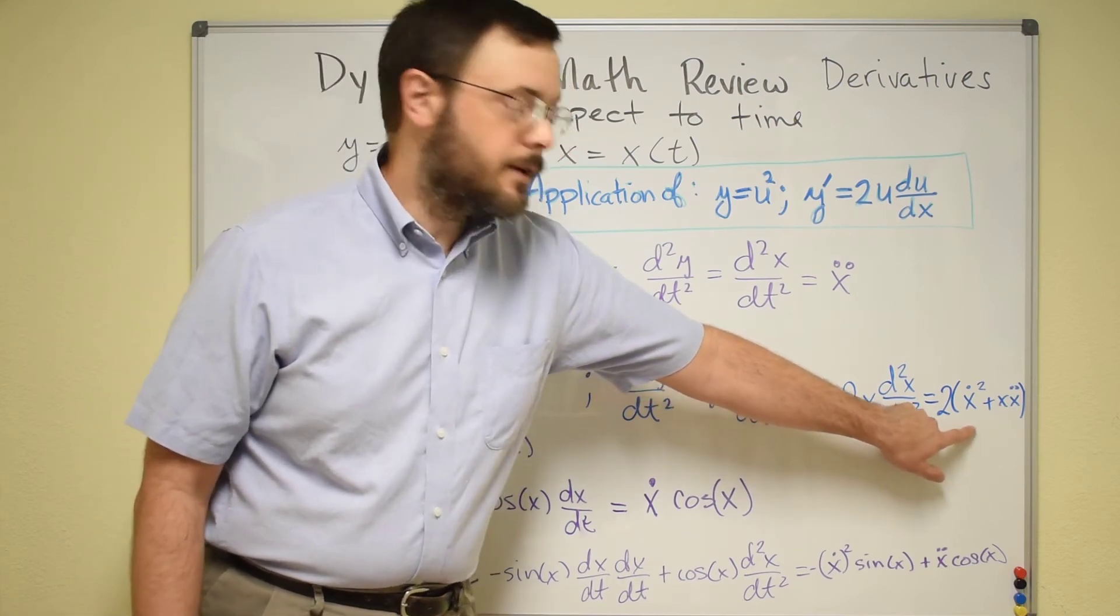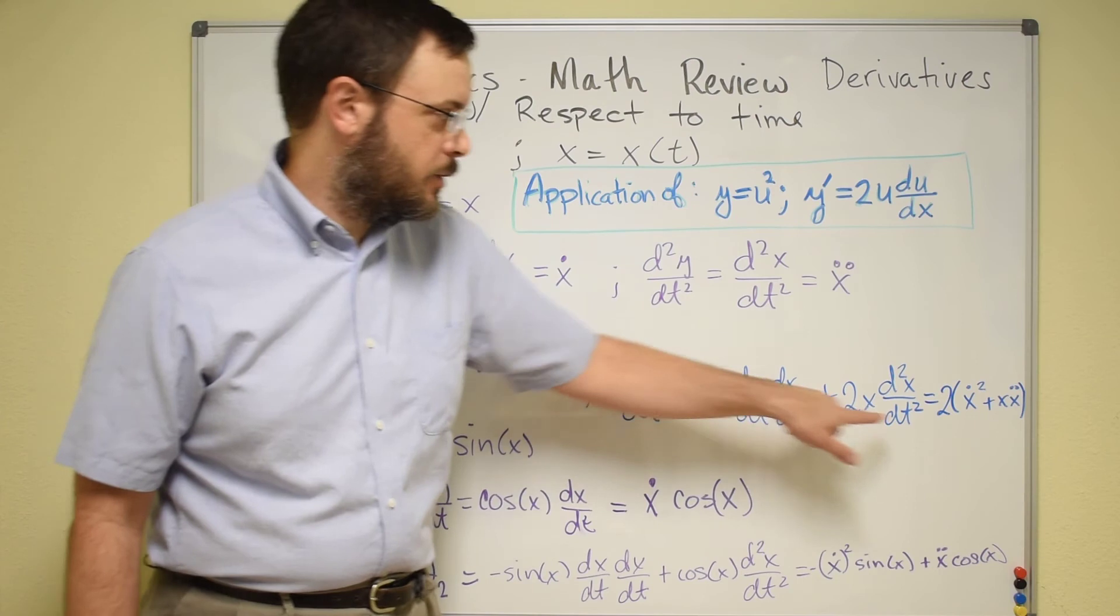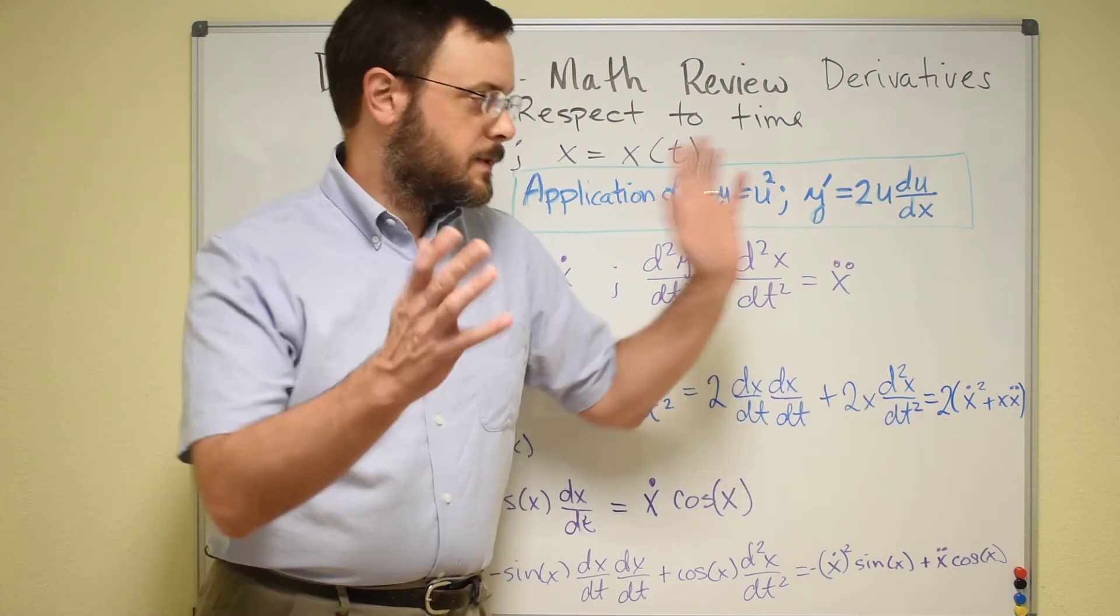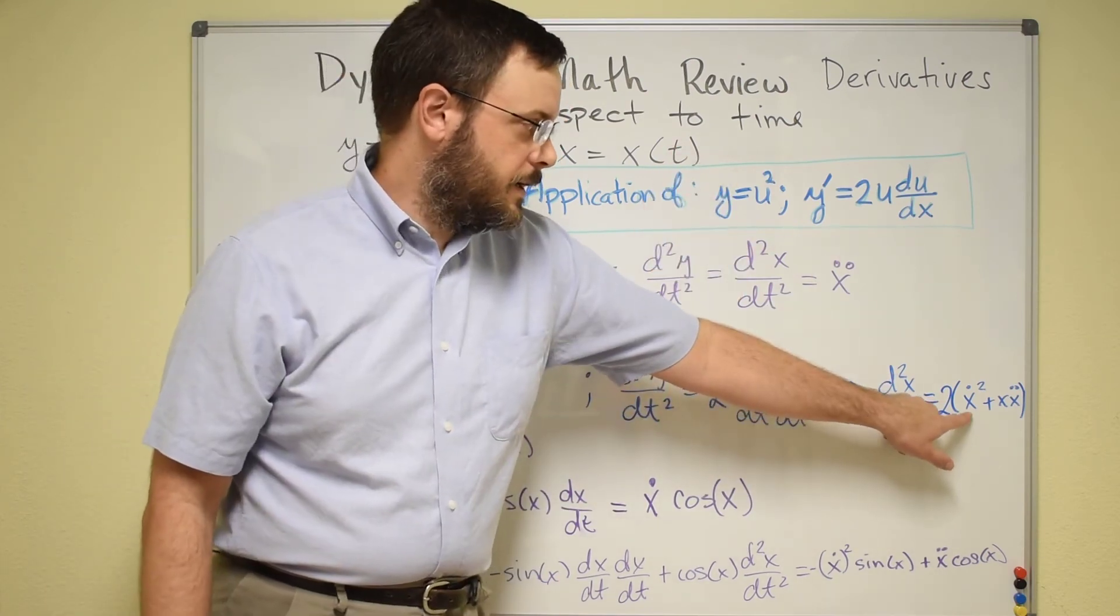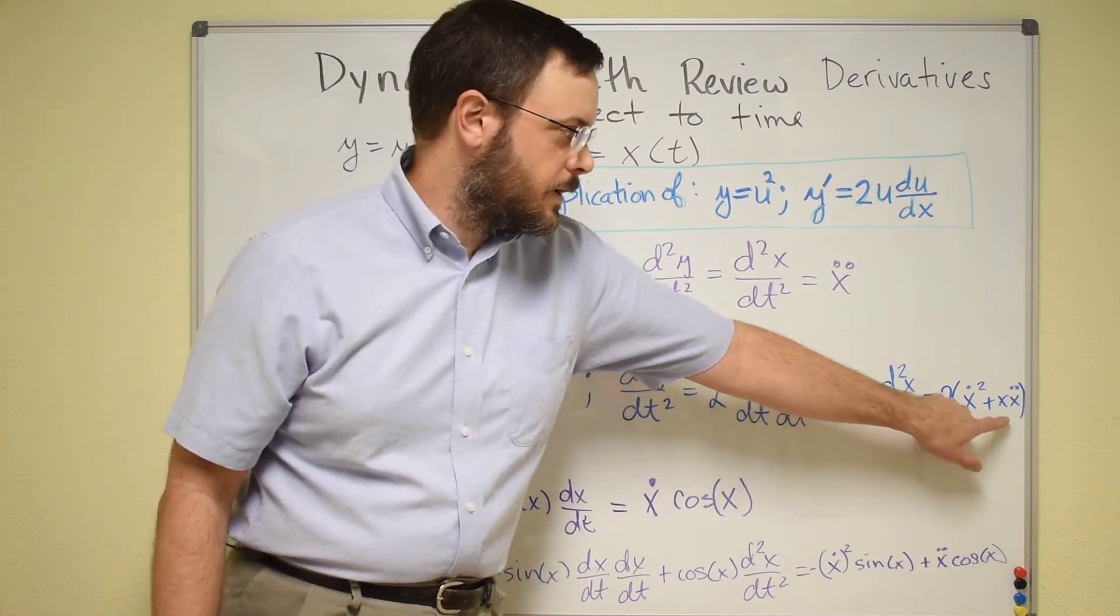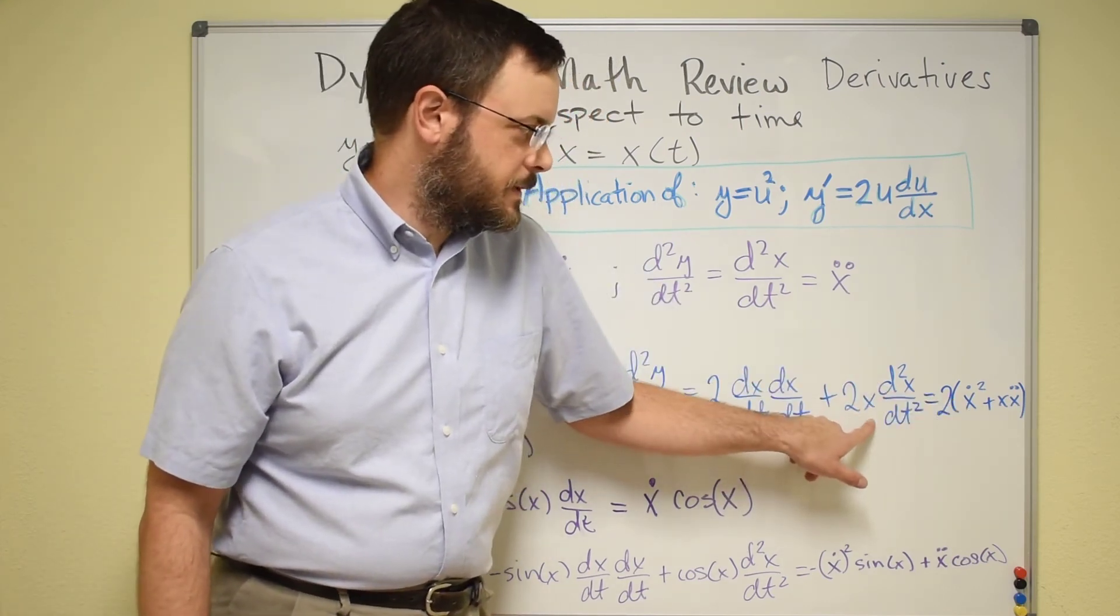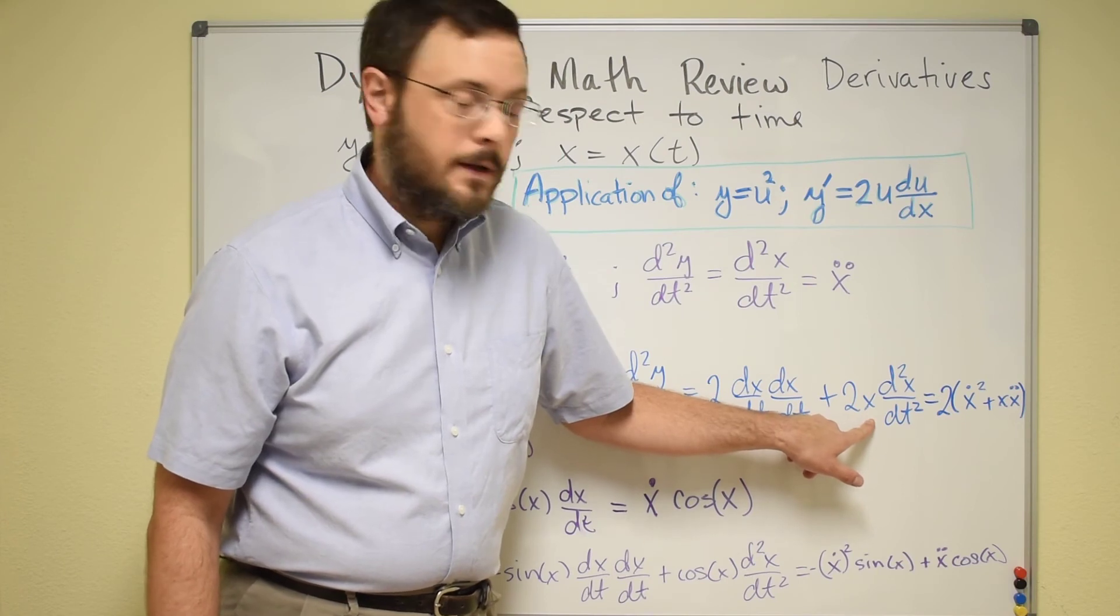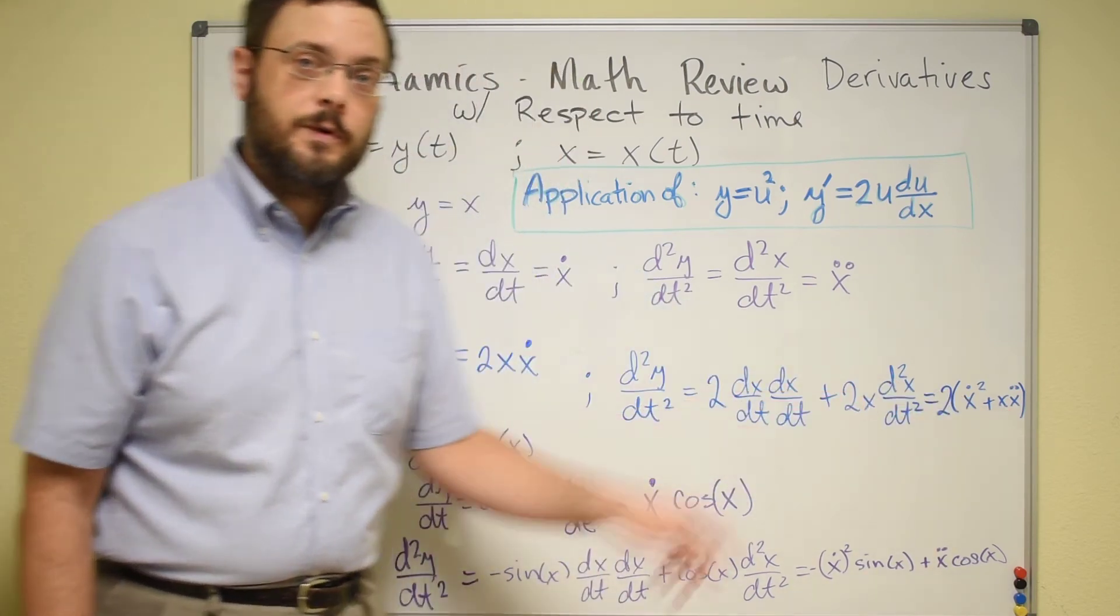2 times ẋ squared, you've got 2 of these ẋ terms, plus x times ẍ, close parentheses. And then let's take a look at another function. So here we have y equals sine of x.